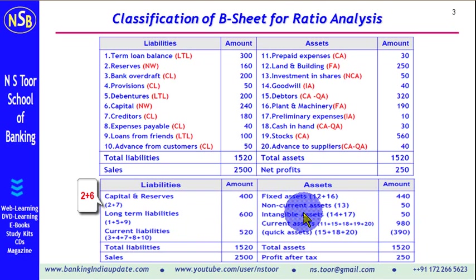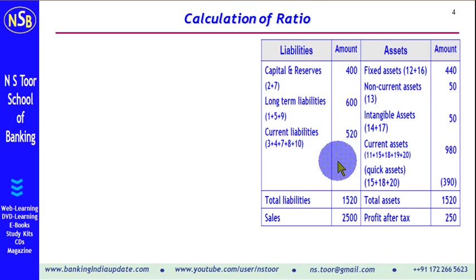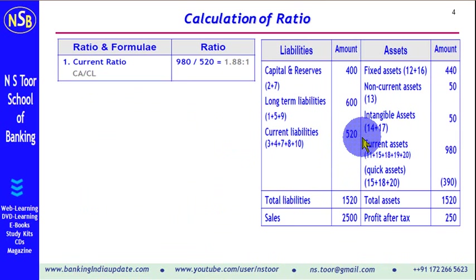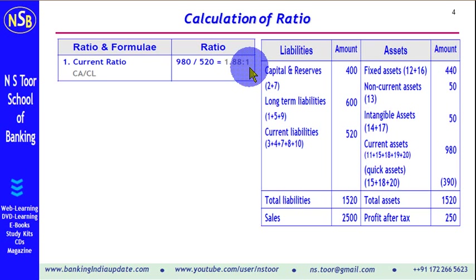We now use this summarized information to calculate the ratios. Current ratio is calculated as current assets divided by current liabilities. Current assets are 980 and current liabilities are 520, giving a ratio of 1.88:1. The benchmark ratio is 1.33:1, so at 1.88:1 this shows a high liquidity position.